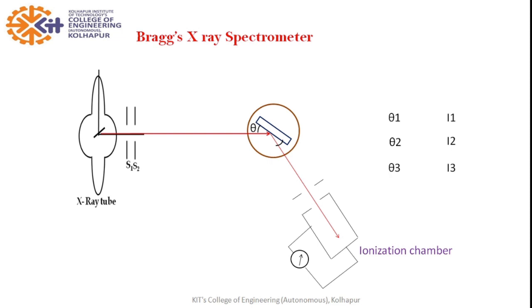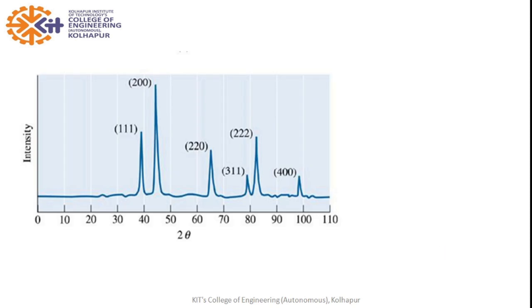We record ionization current for different glancing angles. We then plot a graph of ionization current versus glancing angle. Since ionization current gives intensity, we obtain the graph of intensity versus glancing angle (or 2θ).